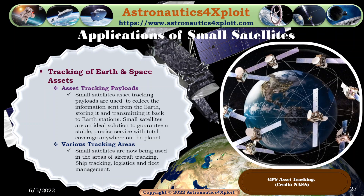Small satellites are used to collect information sent from the Earth, storing it and transmitting it back to Earth stations. Small satellites are an ideal solution to guarantee a stable, precise service with total coverage anywhere on the planet. Small satellites are now being used in the areas of aircraft tracking, ship tracking, logistics, and fleet management. This picture shows GPS asset tracking.